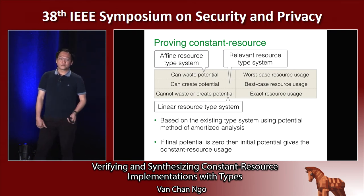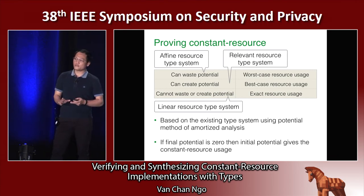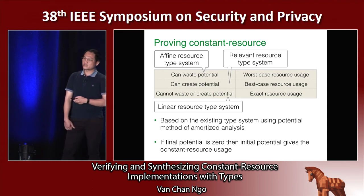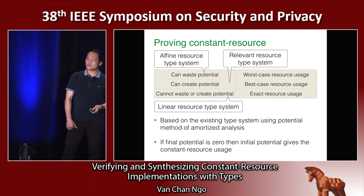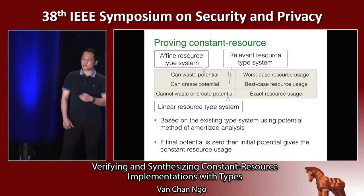To prove constant resource consumption in a program, we use the resource type system. The resource type system is based on the existing type system using the potential method of amortized analysis. In our type system, if potential cannot be wasted or created, the difference between the initial potential and the final potential gives the exact resource consumption of the program. If the final potential is zero, then the initial potential gives the constant resource consumption of the program.